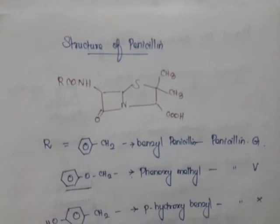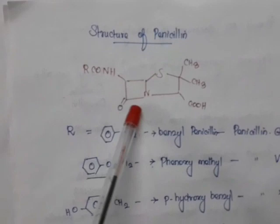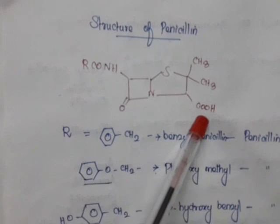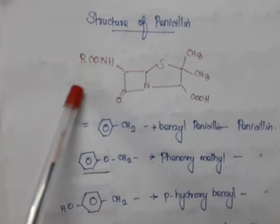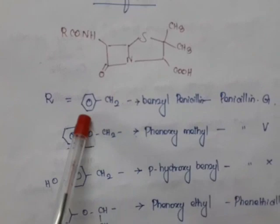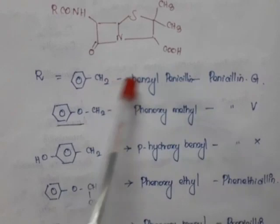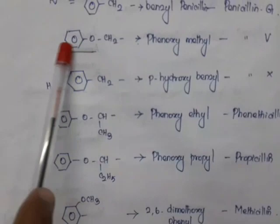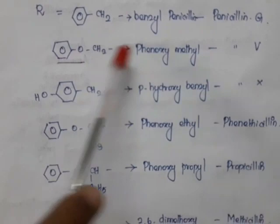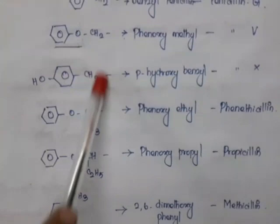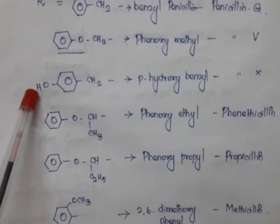Now we'll see individual penicillin structures based on the R group. Penicillin has a beta-lactam nucleus fused with a thiazolidine ring, dimethyl at position 2, carboxyl at position 3, and acylamino at position 6 — and R determines the specific penicillin. When R = benzyl (C₆H₅CH₂-), it is benzyl penicillin, otherwise called penicillin G. When R = phenoxymethyl (C₆H₅-O-CH₂-), it is phenoxymethyl penicillin, otherwise penicillin V. When R = para-hydroxybenzyl, it is penicillin X.